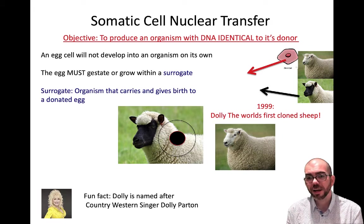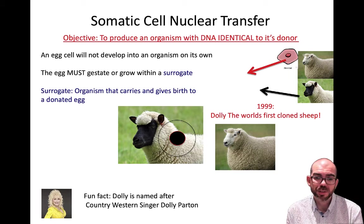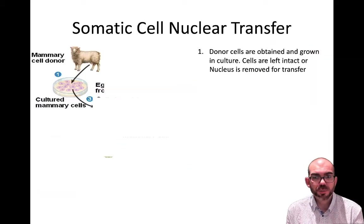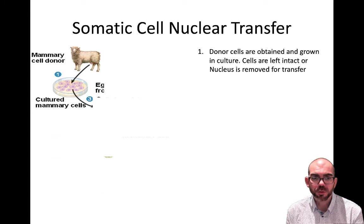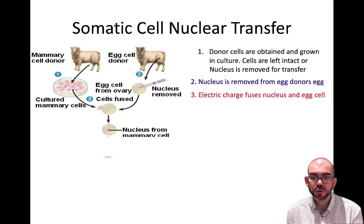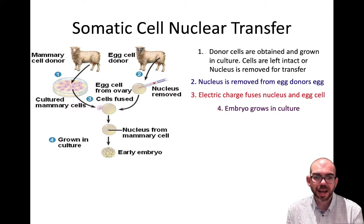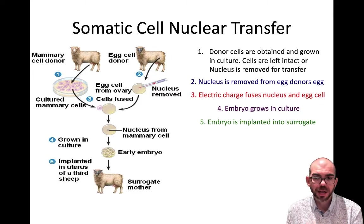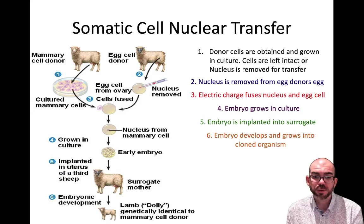The world's first cloned sheep got a lot of press attention in 1999 and was named Dolly — named by the scientists who developed her because they thought she looked like Dolly Parton. To review: we obtain a donor cell and an egg, remove the nucleus from the somatic cell for transfer, remove and discard the nucleus from the egg, fuse the two with an electric charge, allow the embryo to grow in culture, then implant it into a surrogate who gives birth to the clone.